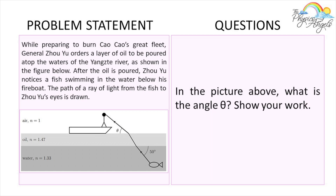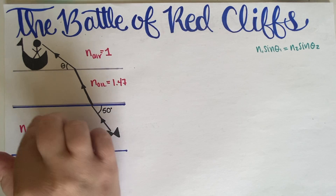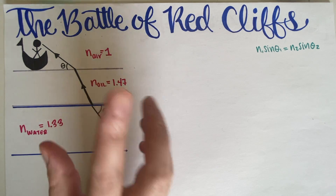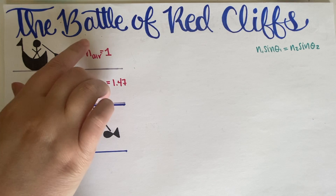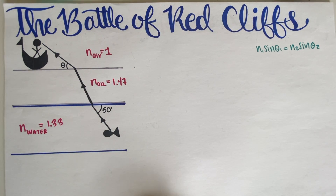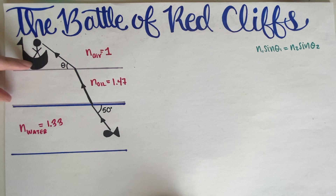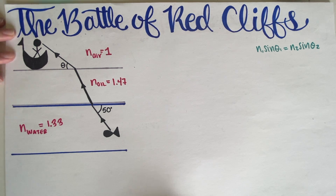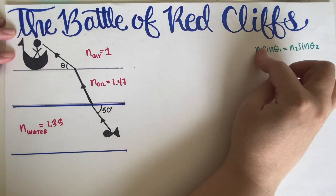What we have to do is find a specific angle shown in the picture. As you can see in my drawing, we have a fish in water, then an oil layer, then air — and the entire problem consists of finding this angle. If we find this angle, the problem is complete. The only equation we're going to need is Snell's law.